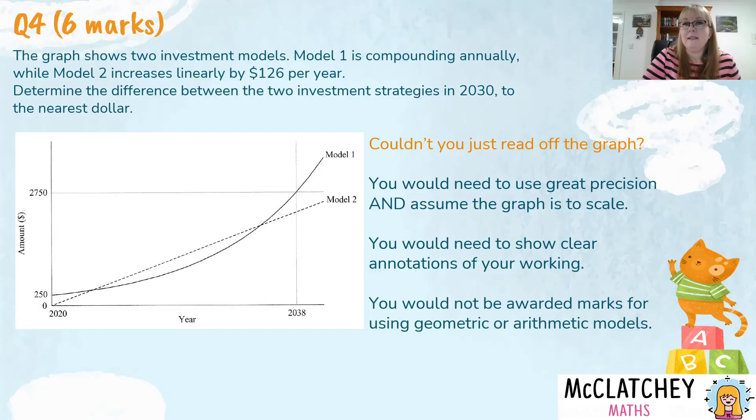Also, you'll notice in the marking scheme, there were two or three marks there for using a geometric and arithmetic model. So if you've just jumped into reading off the graph, you've thrown away potentially half the marks straight away because the marking scheme does not allow for you to read off the graph.